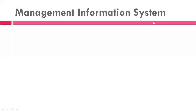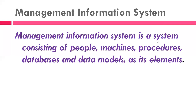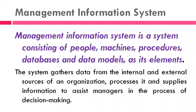What is Management Information System to start with? Management Information System is a system consisting of people, machines, procedures, databases, and data models as its elements. It is a system that gathers data from internal and external sources of an organization, processes it, and supplies information to assist managers in the process of decision making.